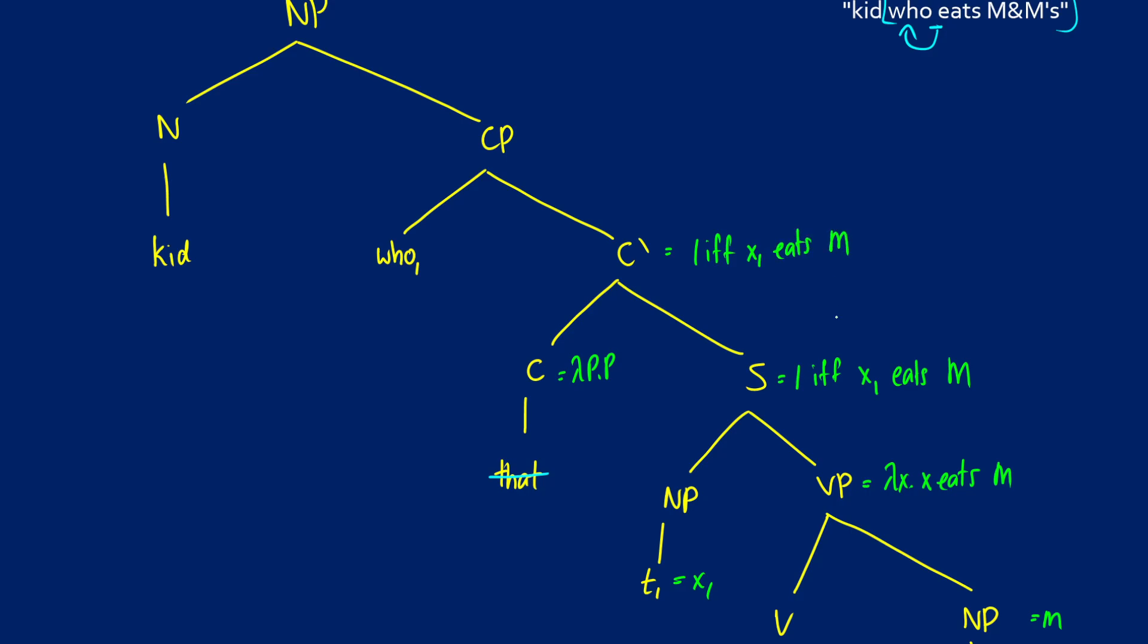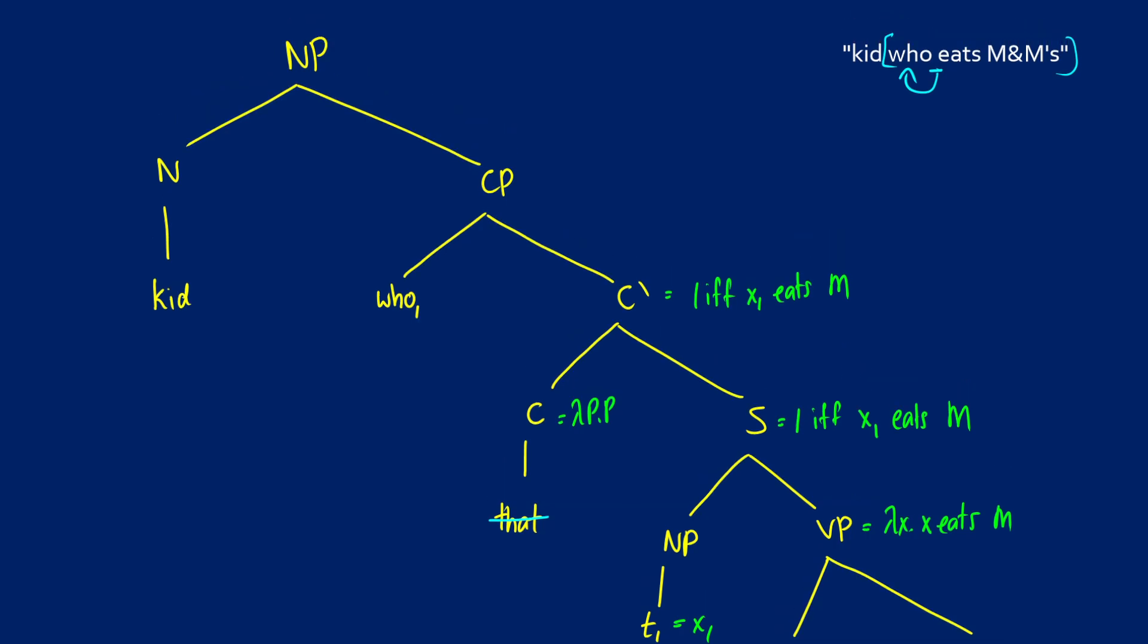Now when we get to the "who" operator, this is where we can do abstraction. So I see that we have "who" indexed with one, which means that if X1 is free, then we can bind it. So this is what this is going to allow us to do. So our CP at this stage is going to now be lambda X1 dot X1 eats M for M&M's.